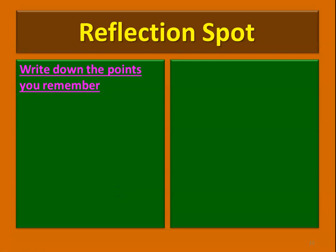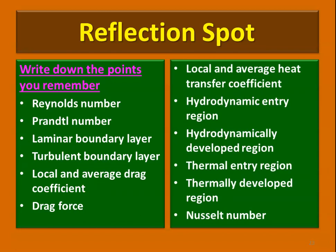We have another reflection spot. Write down the important points you remember from the past 20–25 minutes of discussion. If your list matches these key terms, you have listened well: Reynolds number, Prandtl number, laminar boundary layer, thermal boundary layer, local and average drag coefficient, drag force, local and average heat transfer coefficient, hydrodynamic entry region, hydrodynamically developed region, thermal entry region, thermally developed region, and Nusselt number. These are the important terminologies required for further discussion and problem-solving in convection heat transfer.